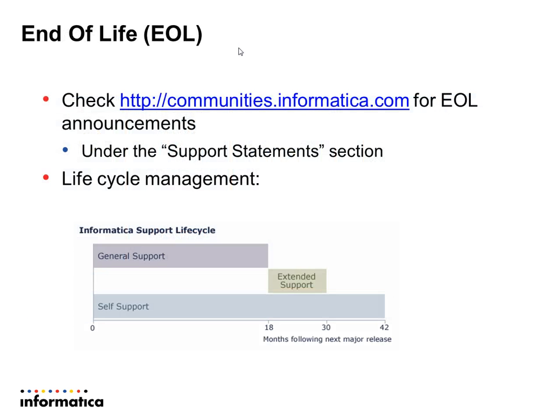How do you know when it's end-of-life for your product? Check communities.informatica.com for end-of-life announcements. Under support statements, you can see the general basis for end-of-life. After a new version has been introduced, the end-of-life phase starts for the old product — 18 months after the next major release. For example, AddressDoctor version 4 ended support 18 months after version 5 was introduced. You can also buy extended support for the next 12 months, giving you 30 months total after the new version is released to migrate.